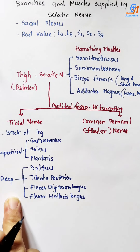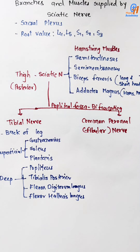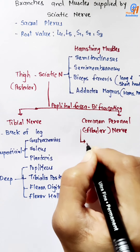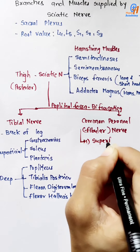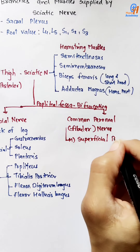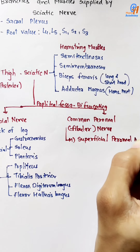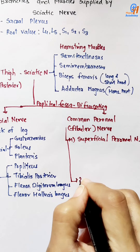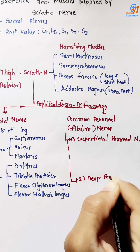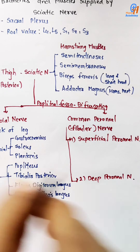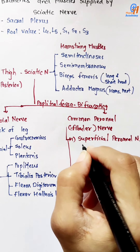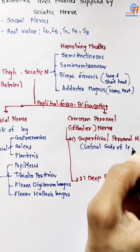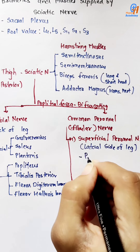The common peroneal nerve divides into two branches: the superficial peroneal nerve and the deep peroneal nerve. The superficial peroneal nerve supplies the lateral compartment of the leg — peroneus longus and peroneus brevis.